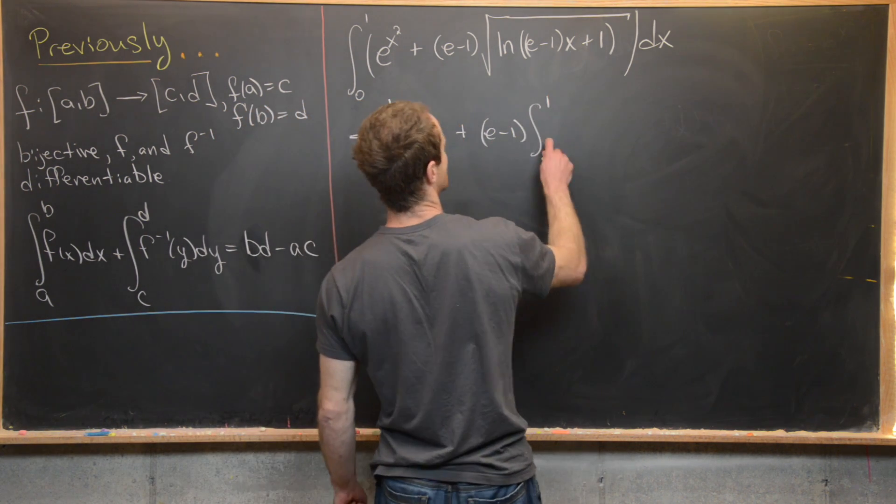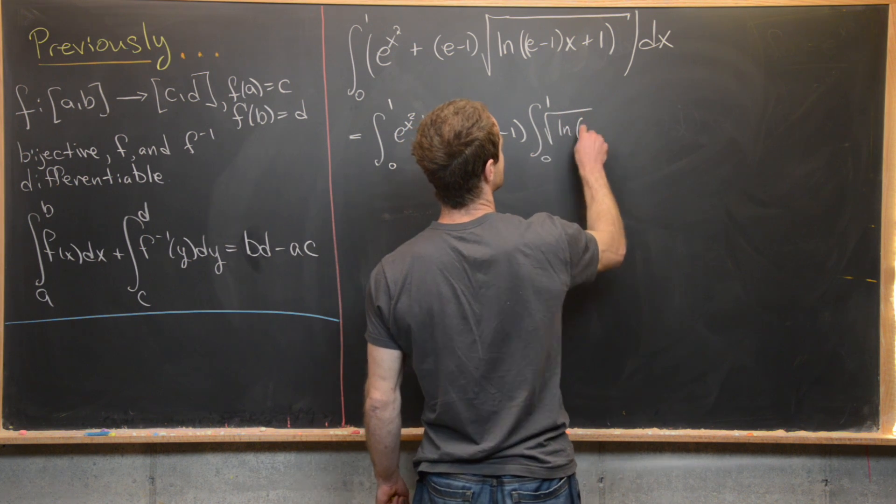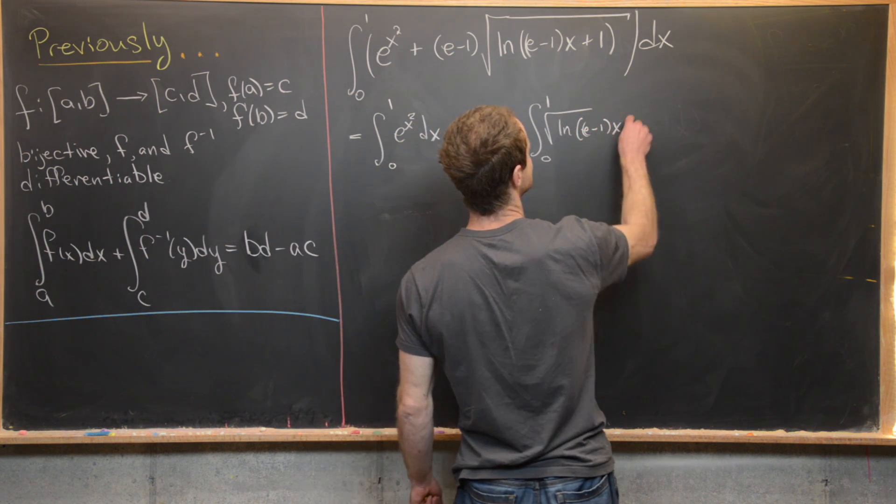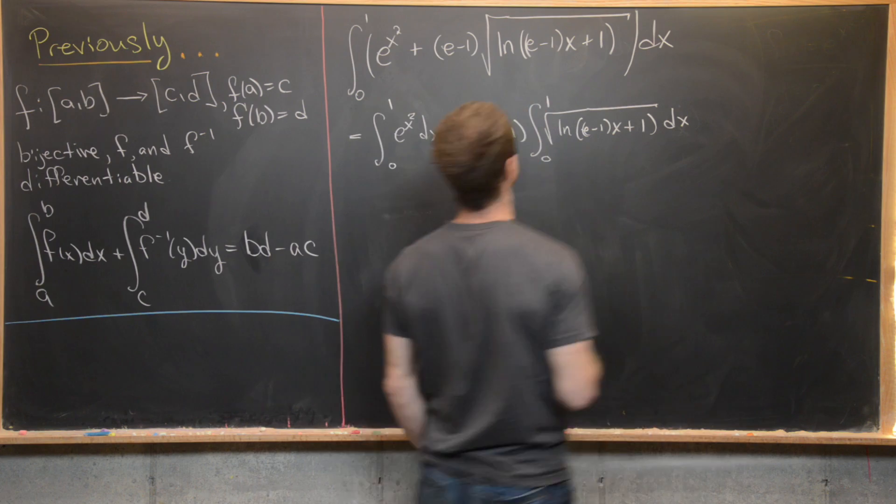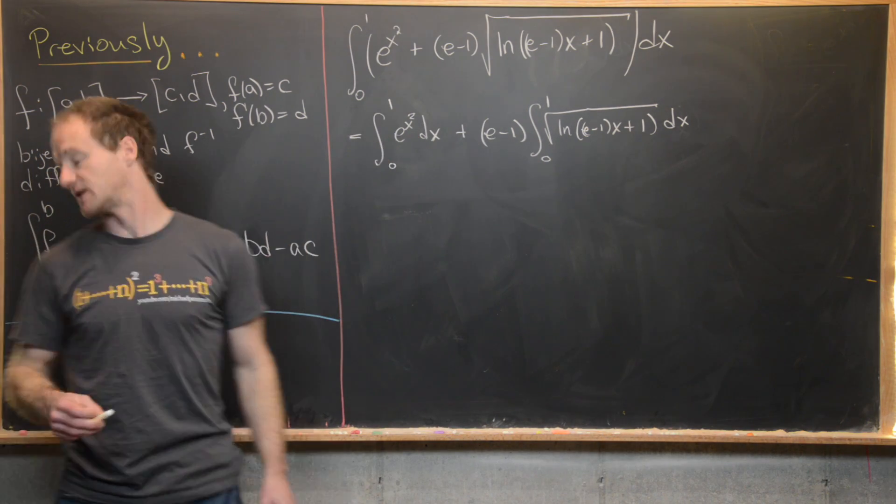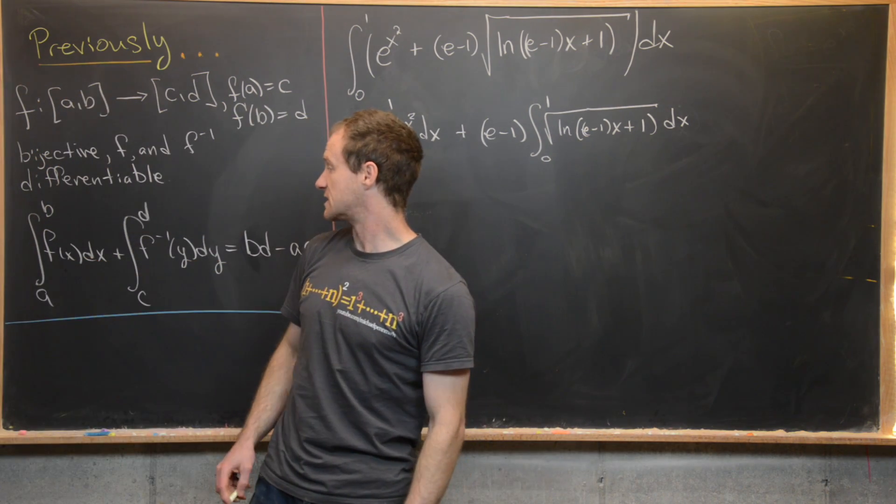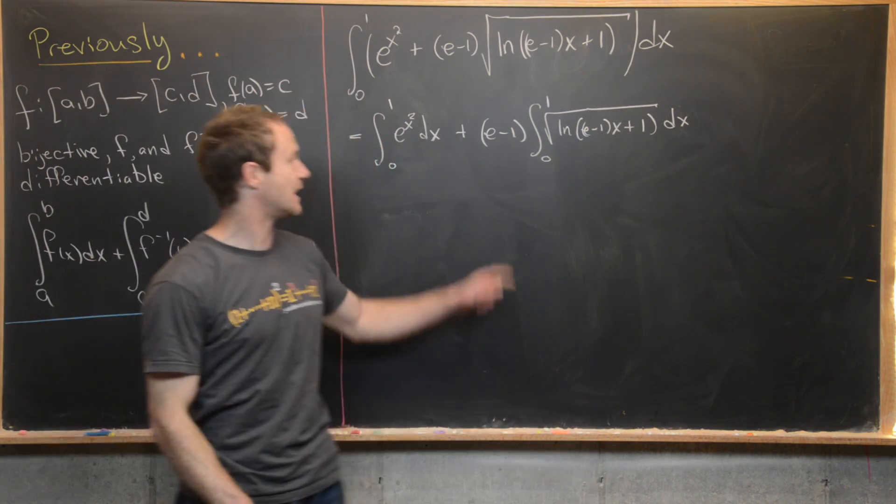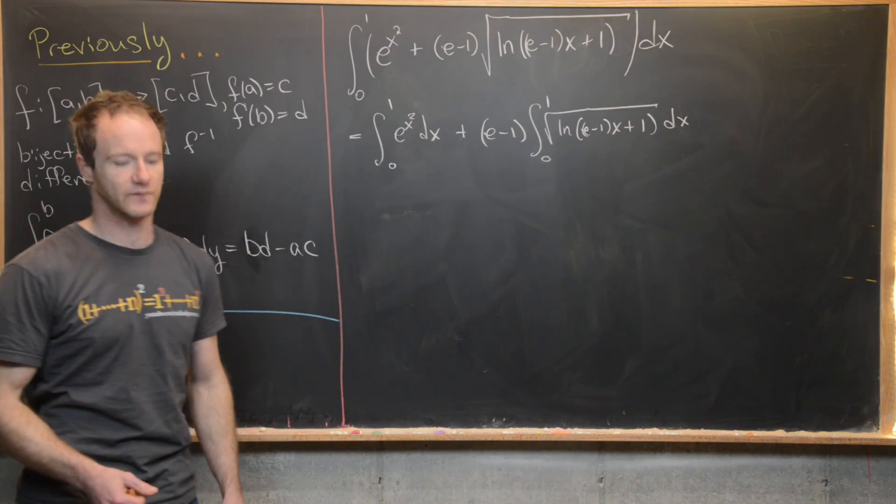the integral from 0 to 1 of the square root of the natural log of (e minus 1) times x plus 1 dx. Now one of these integrals is going to play the role of this first one, this integral of f, and the other one, the integral of this second one, f inverse.